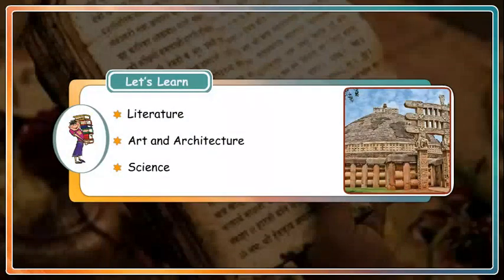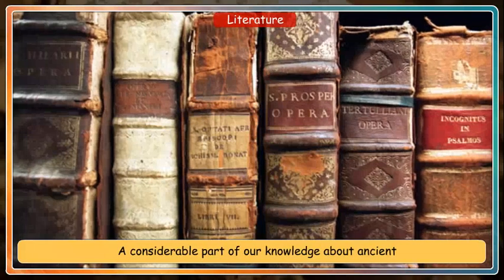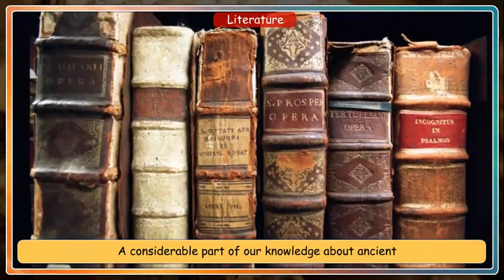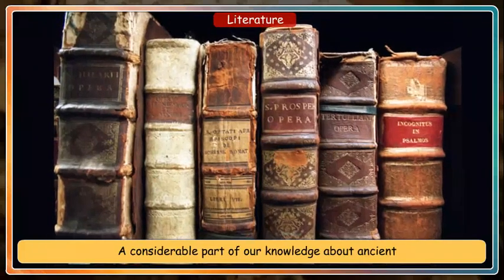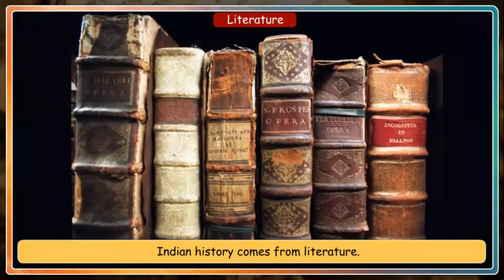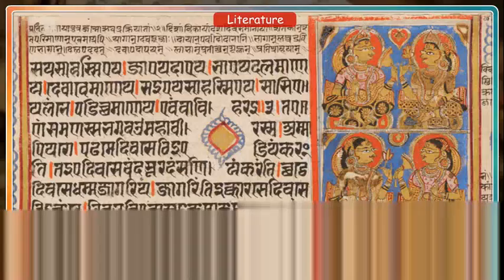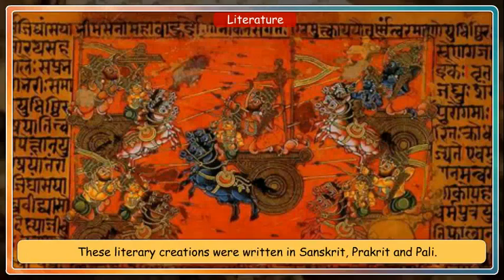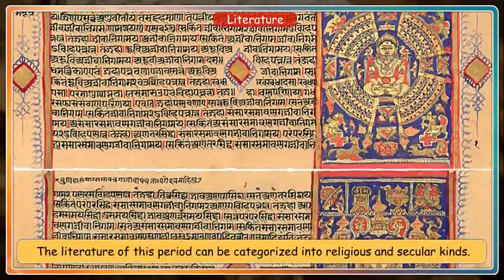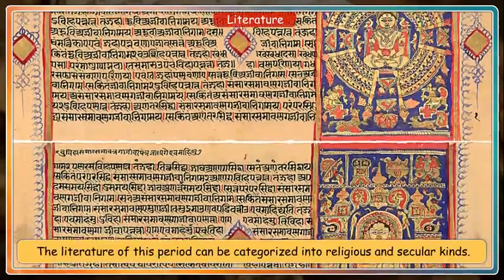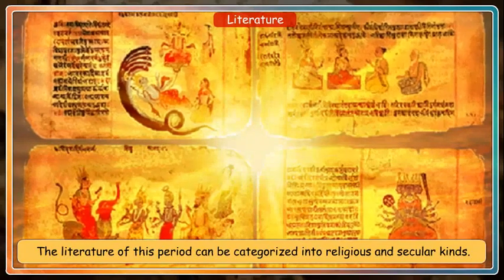Chapter 20: Art, Science and Architecture of Ancient India. A considerable part of our knowledge about ancient Indian history comes from literature. These literary creations were written in Sanskrit, Prakrit and Pali. The literature of this period can be categorized into religious and secular kinds.